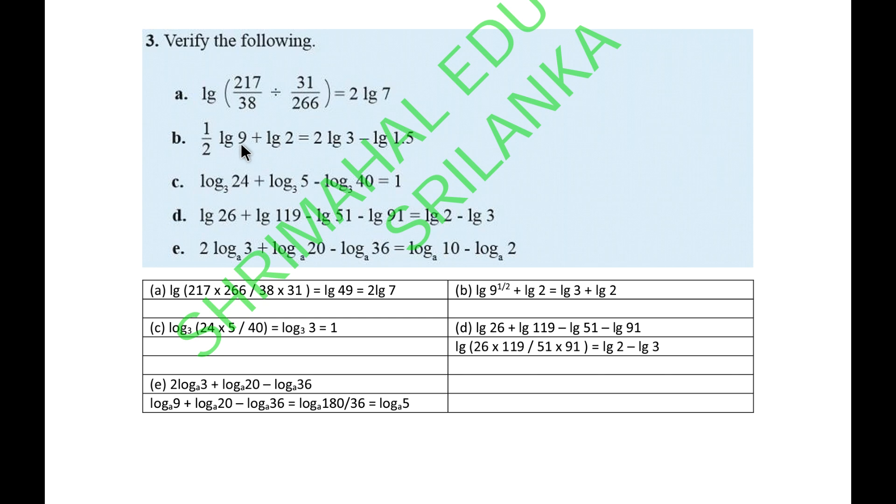The B part, half log 9 plus half log 2 equals 2 log 3 minus log 1.5. Half log 9 means you can bring this half to here. It's log 3, which is 3 to the power 2. So that's log 3, here this is log 2. 3 times 2 is 6. Here comes 3, here comes 2, 6.